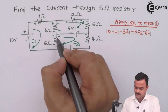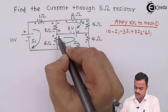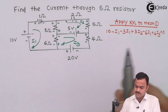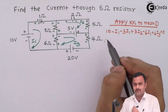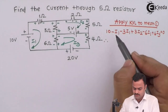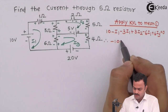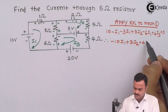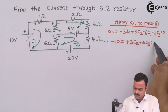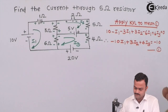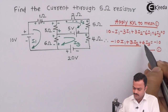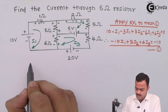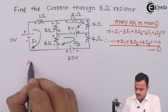The 6 ohm resistor is common between the first and third mesh. For mesh one it is minus 6·i1, and for mesh three it is minus plus, giving plus 6·i3, equal to zero. Simplifying and grouping all terms, we get the equation: minus 10·i1 plus 3·i2 plus 6·i3 equals minus 10, as equation number one.